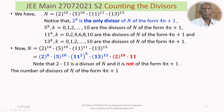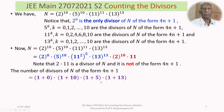The total number of divisors of N which are of the form 4N+1 is: (1+0) × (1+10) × (1+5) × (1+13). The factor (1+0) = 1 accounts for the only valid power of 2 (which is 2^0), and the remaining factors come from the valid powers of 5, 11 (even powers only), and 13. This gives 1 × 11 × 6 × 14 = 924.